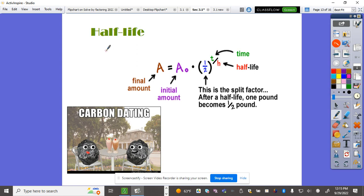For half-life, the formula is A = A₀(1/2)^(T/H). A is the amount, A₀ or P is the initial amount, one-half is the base of the exponential expression, T is the time, H is the half-life. At a certain time, it becomes half. For example, one pound becomes half a pound.